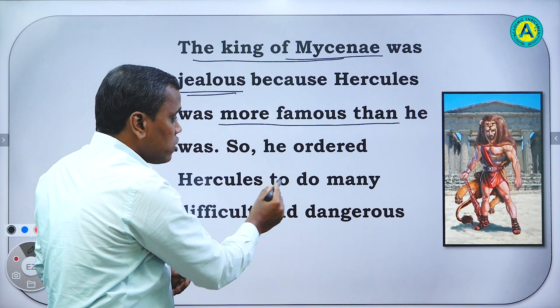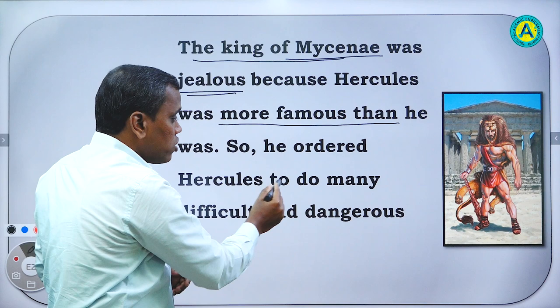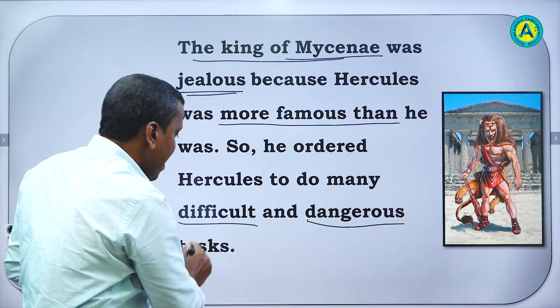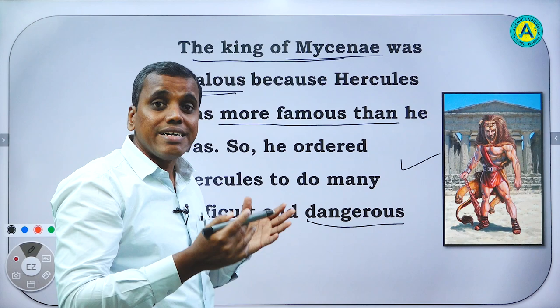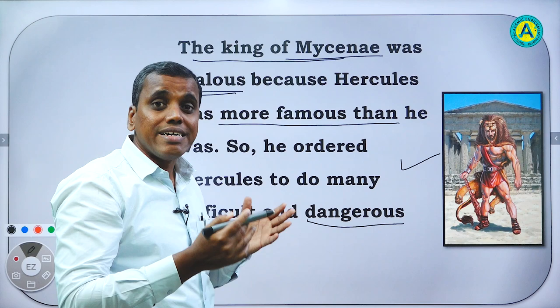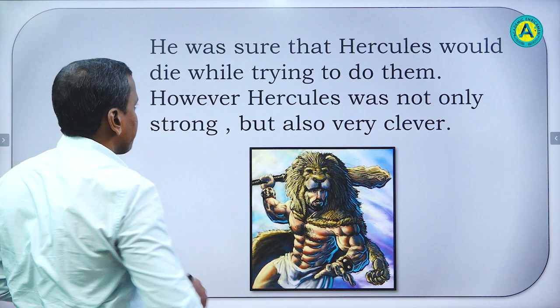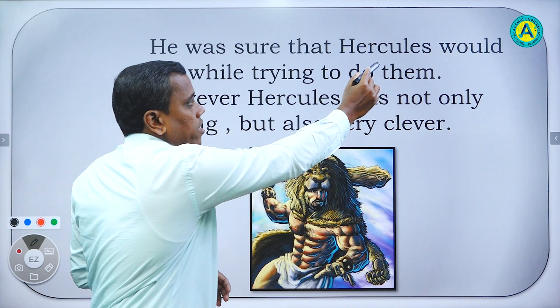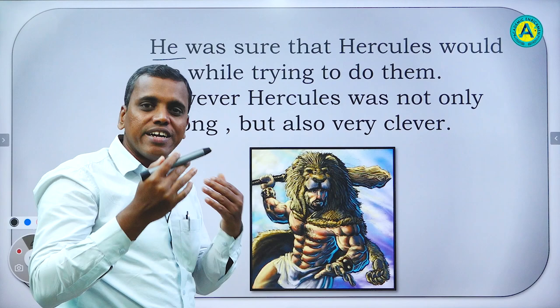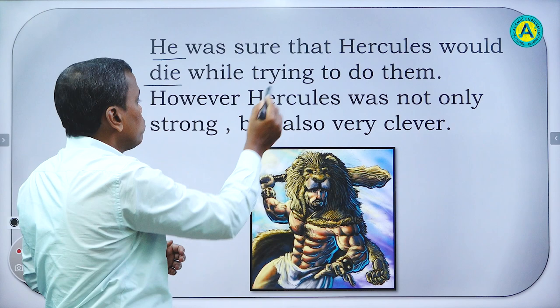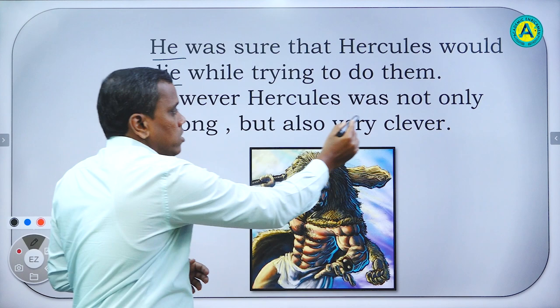What did he do? He ordered Hercules to do many difficult and dangerous tasks. Difficult means very tough and dangerous means very risky — risk of life was there. So these types of tasks were given to Hercules. The king gave difficult and dangerous tasks to Hercules. He was sure that Hercules would die while trying to do them. However, Hercules was not only strong but also clever.